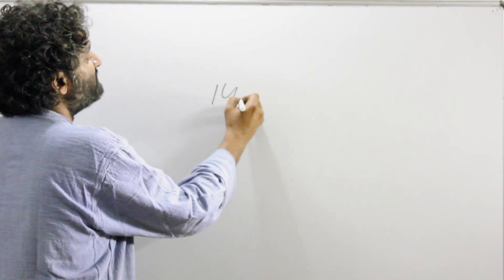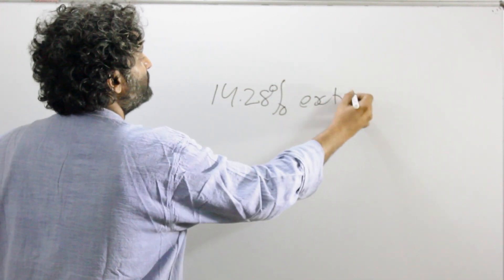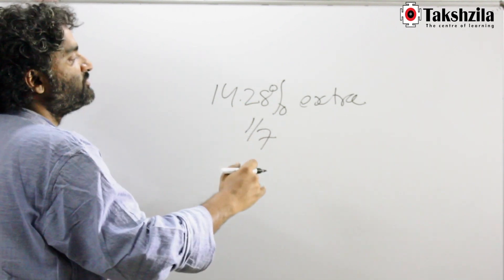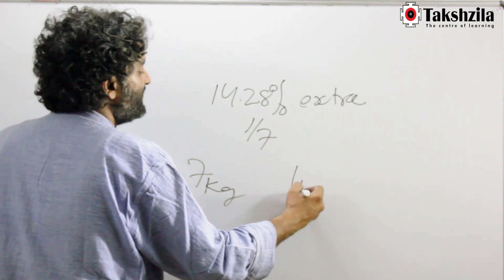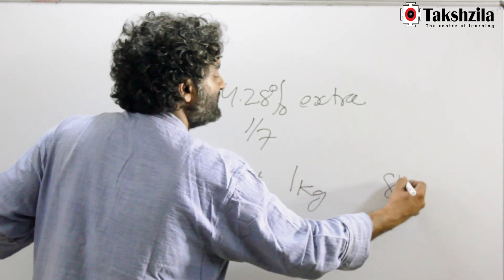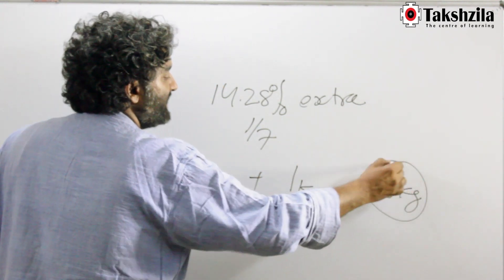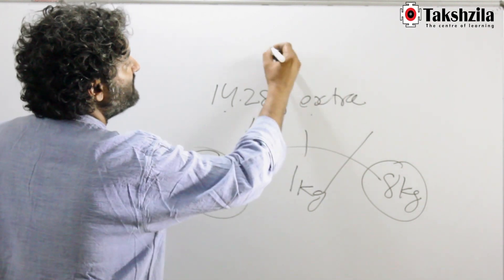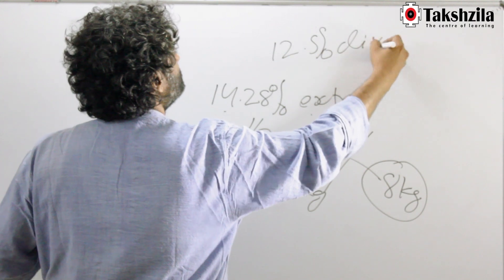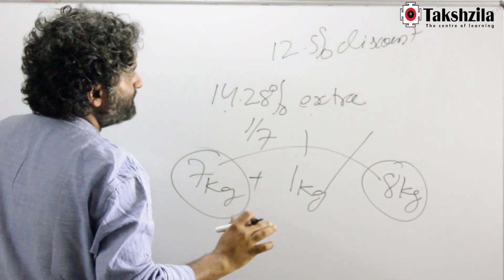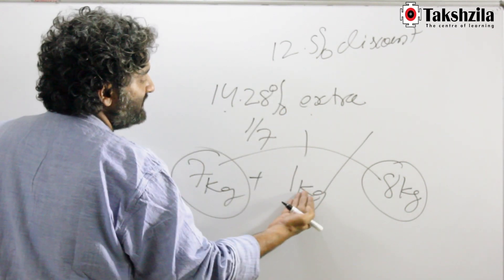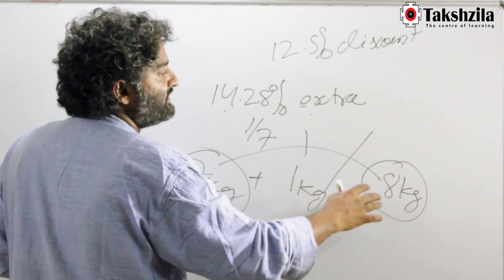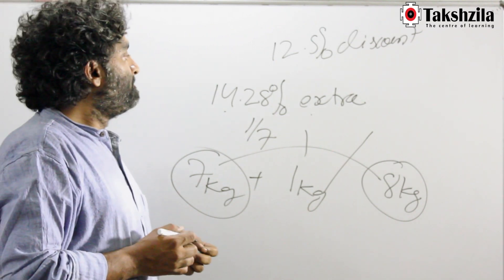Let's say a trader claims to give 14.28% extra amount. 14.28% means one by seven, so one is being provided extra on seven — that is, buy seven kg, get one kg free. The total is eight kgs. You're getting eight kgs but paying for only seven. There is a discount of one on a base of eight, so one by eight = 12.5% discount. Getting 14.28% extra is the same as saying 12.5% discount, or 'buy seven, get one free.'